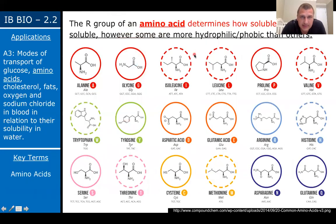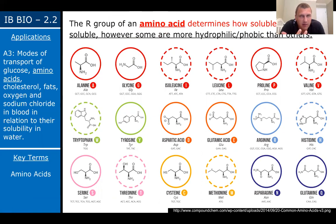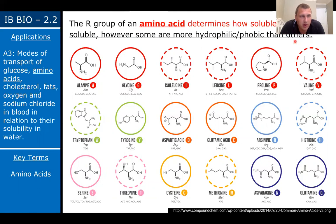The R group of amino acids determines how soluble they are in water. There are about 20 different R groups. The more polar the R group of an amino acid, the more it can dissolve in water. All amino acids will be soluble to some degree, but some will be more hydrophilic or hydrophobic than others. So make sure you understand that amino acids — the building blocks of proteins — can travel in your blood, but depending on how polar the R group is, that determines how easily they dissolve.